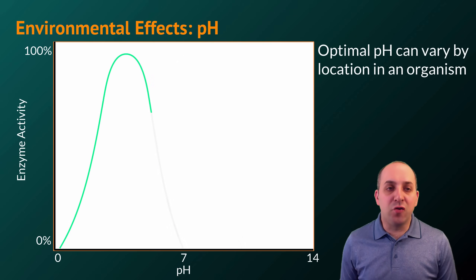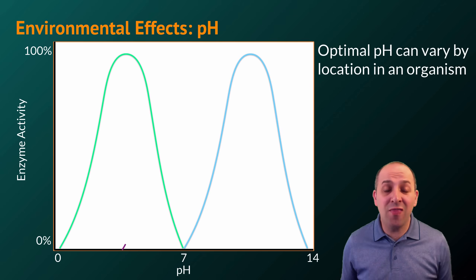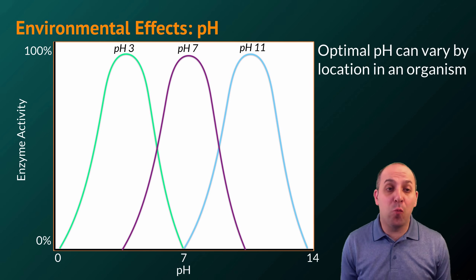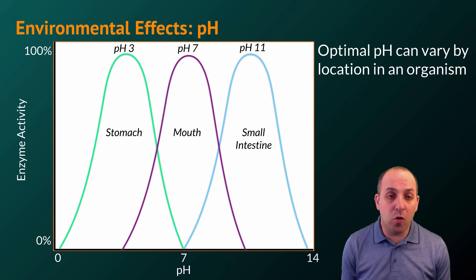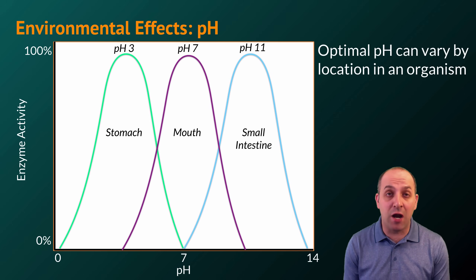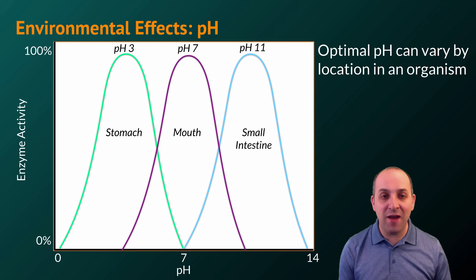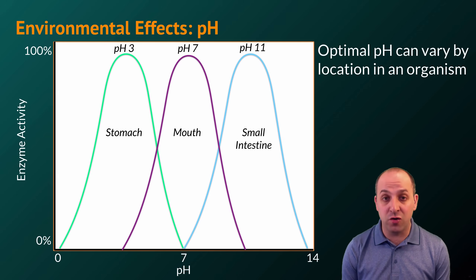Another major environmental variable that can affect enzyme function is pH. Unlike temperature, the enzymes present in an organism can function optimally at widely different pH values. This is a result of the pH of the environment in which the enzyme is supposed to function, and again reflects the relationship between the pH of the environment and its effect on protein structure.